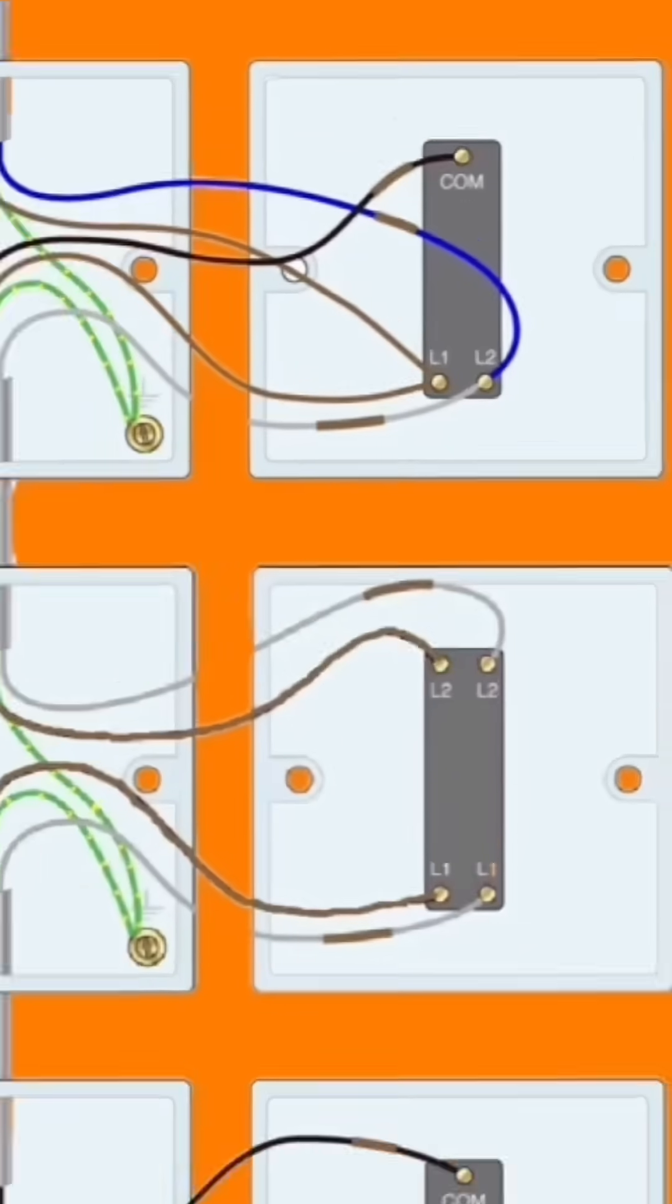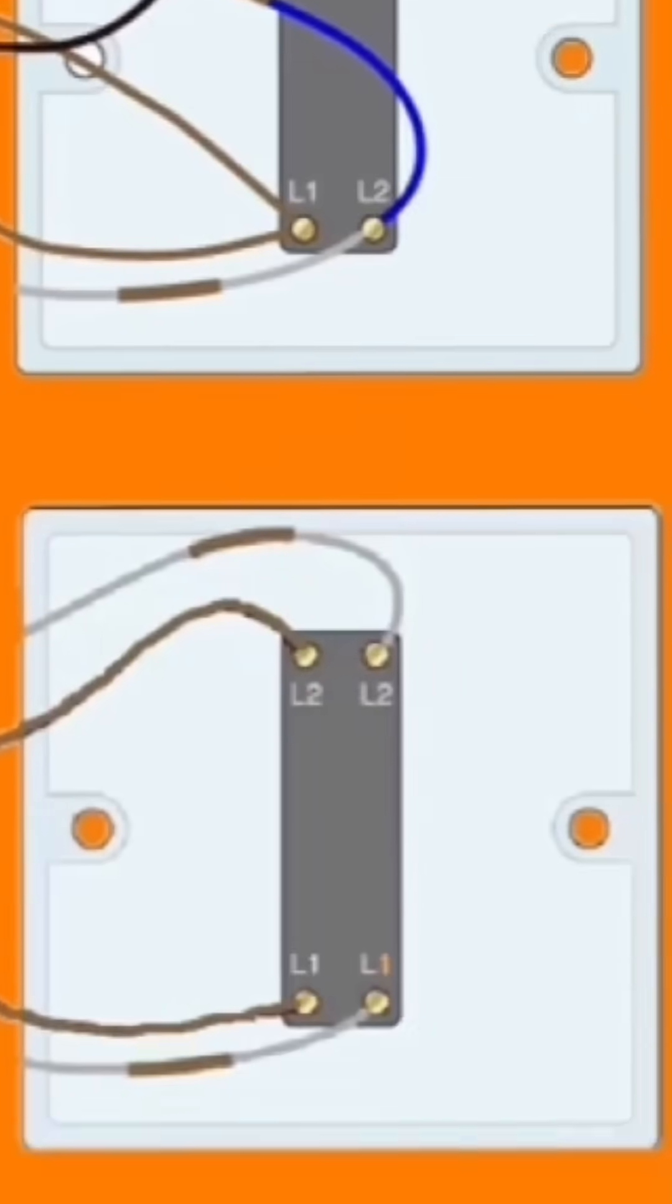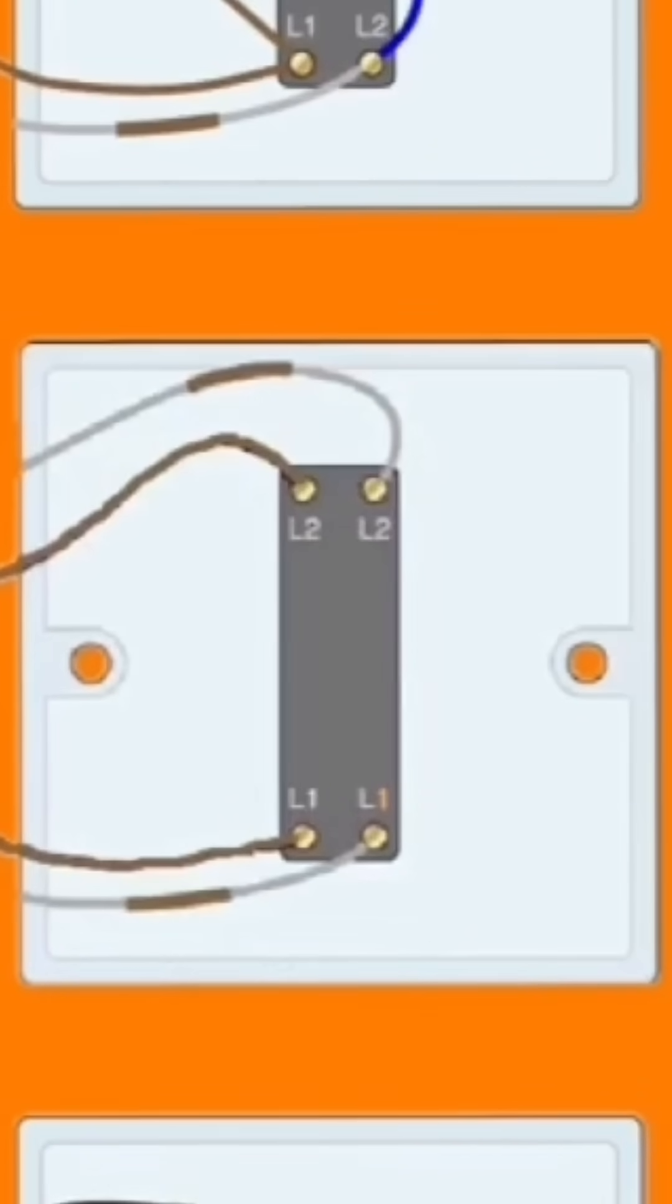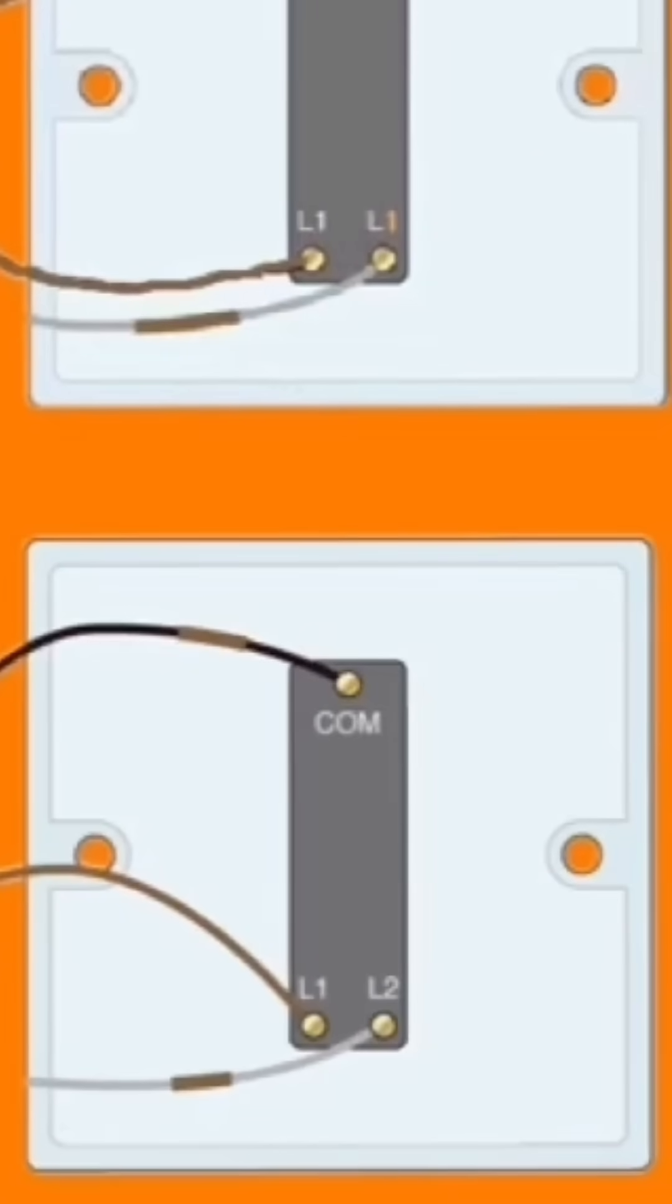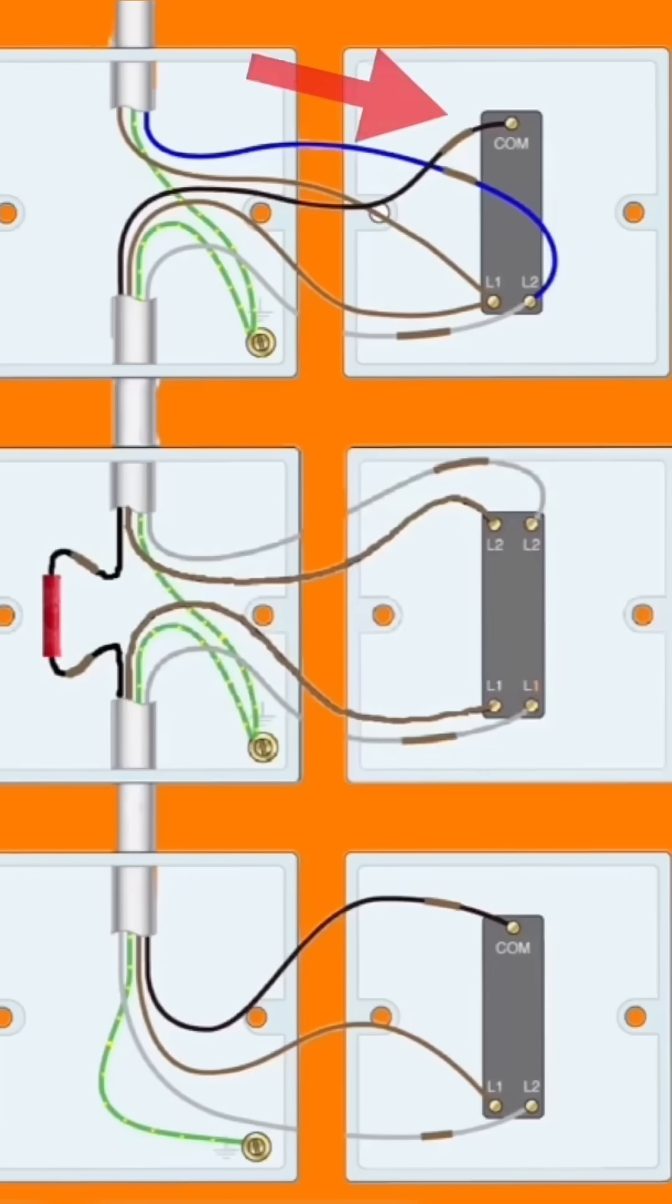In order to have two-way and intermediate switching, the first switch is a two-way switch. You can have as many intermediate switches as you like—I've only shown one in this drawing—and then followed by a final two-way switch.